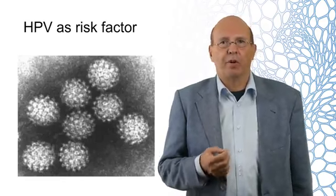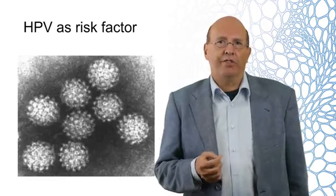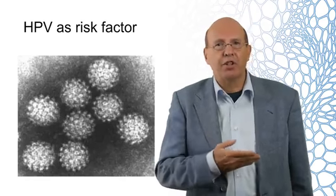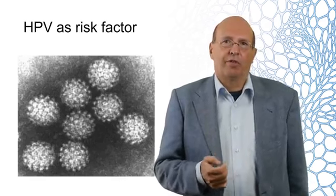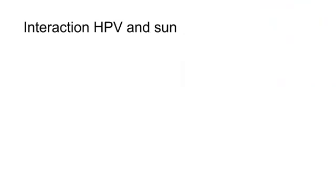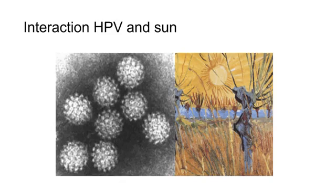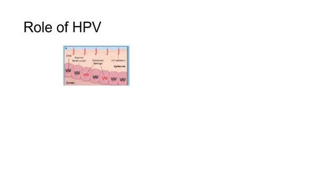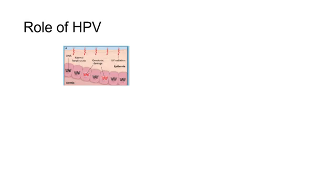The virus that may be involved is the human papilloma virus. These are DNA viruses that form particles, as is shown here. What could be the role of human papilloma viruses in skin carcinogenesis? We think that these viruses may interact with the mechanisms which prevent and repair sun-induced damage to the skin. When we are outside in the sun, we will develop genotoxic damage in the skin. Normally, this damage is repaired by DNA repair mechanisms, or if the cells are too heavily damaged, they will undergo programmed cell death, also called apoptosis.